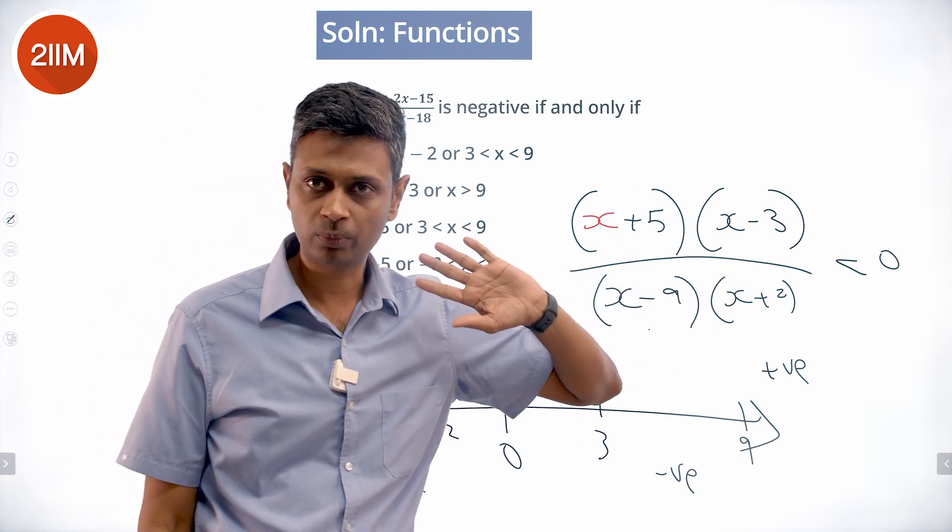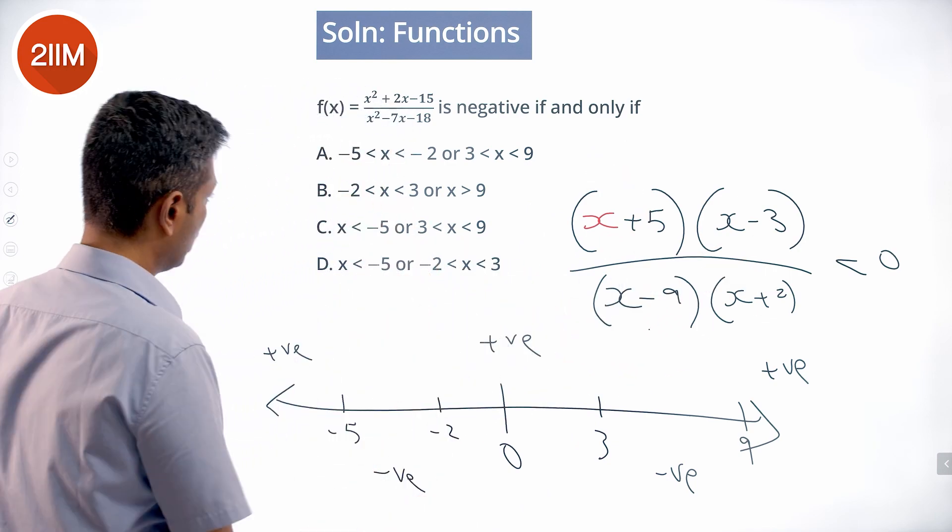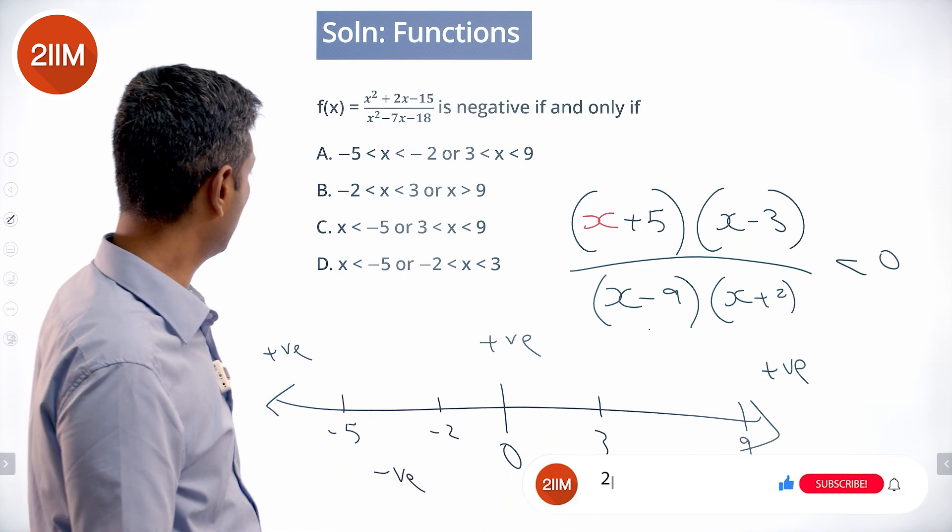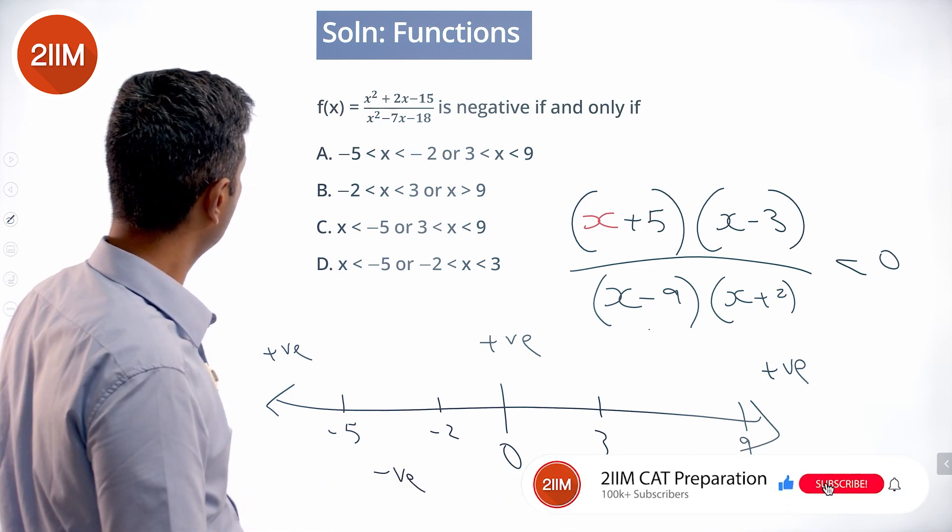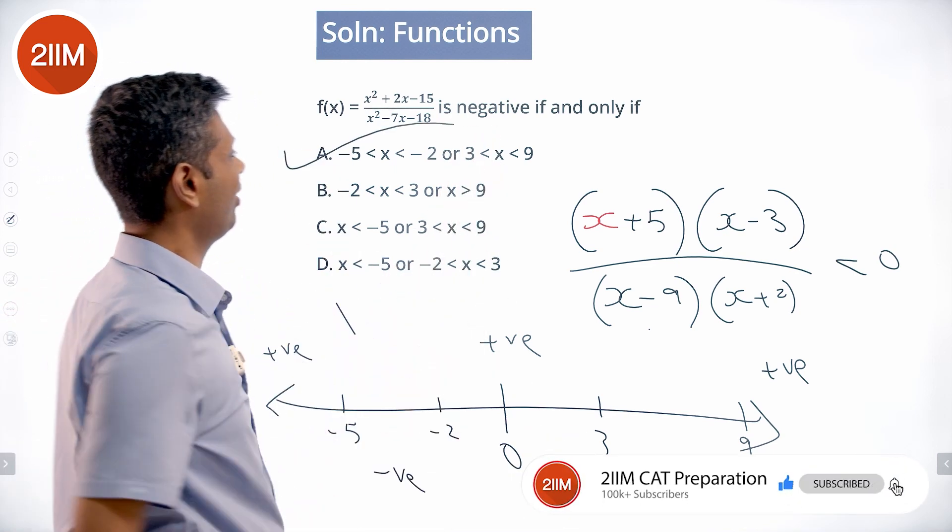Where does it work? It works from -5 to -2 and from 3 to 9. So the solution is x ∈ (-5, -2) ∪ (3, 9). No less than or equal to, since it's clearly negative, not zero.